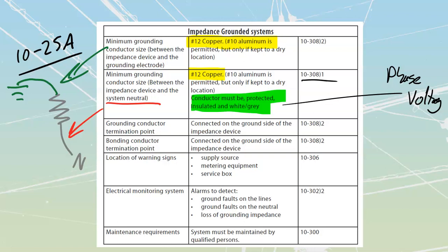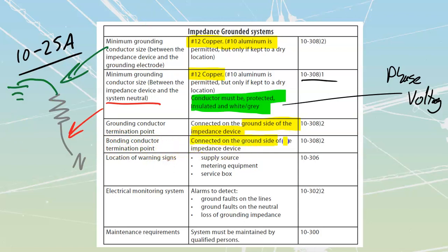The grounding conductor termination point is going to be the ground side of the impedance device — that's where my grounding conductor connects. My bonding conductor termination point also has to be connected on the ground side of the impedance device, so my bond comes off there and goes over to the rest of my system. We went over in the previous video how important it is to keep that bond on that side, because otherwise it bypasses all of our resistance. We need the fault current to come back along the bond and then go back through the resistance up to the neutral.